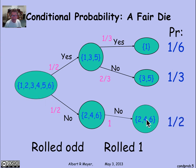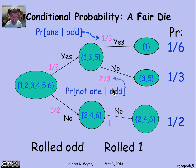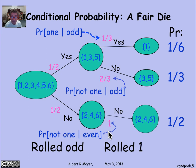Now what's going on here? The number 1/3 is what we said was the probability of rolling a 1 given that you rolled an odd number — that's where that label came from. Likewise, 2/3 is the probability that you didn't roll a 1 given that you rolled an odd number. And the final number is the probability that you didn't roll a 1 given that you rolled an even number — which is certain.